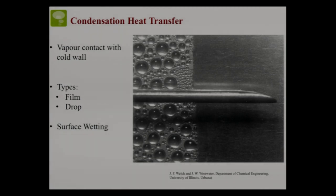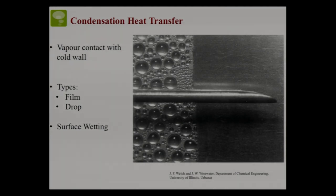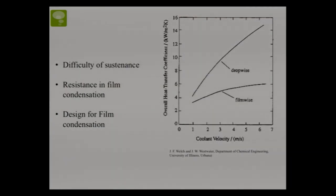Condensation heat transfer is the reverse of boiling — when saturated vapor comes in contact with a cool surface, it transforms into liquid. There can be two types: you can either have a film forming on the surface or droplets of liquid forming. In film condensation, the surface wetting is complete, whereas in dropwise condensation it is not. The heat transfer coefficient for dropwise condensation is significantly higher, making it preferable in heat exchanger design, but the challenge is sustaining it.